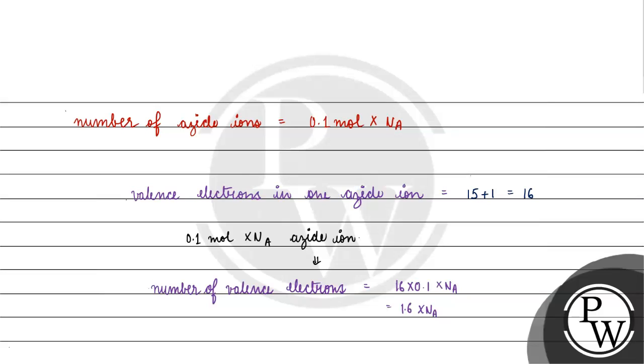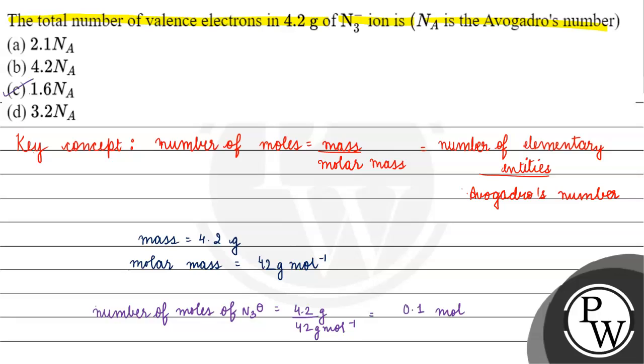Valence electrons present in 4.2 gram of azide ion. Coming back to the question, correct answer to this question will be option C. I hope you understood it well. Thank you and all the best.